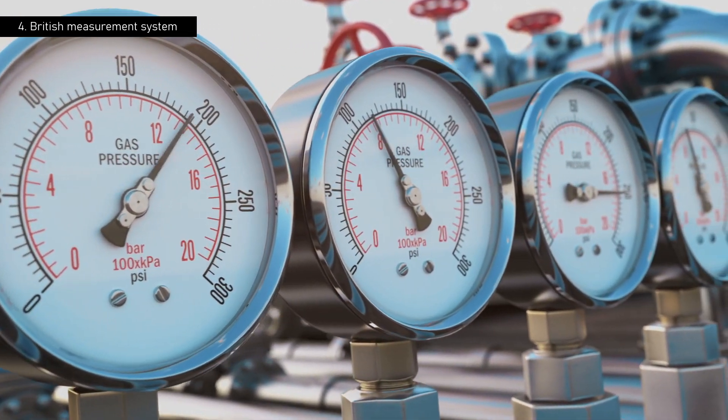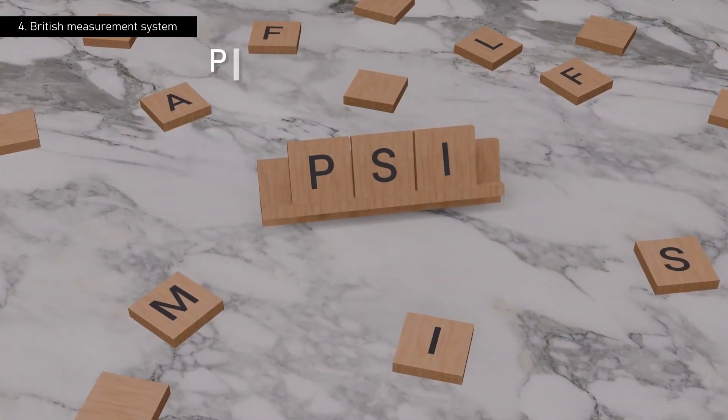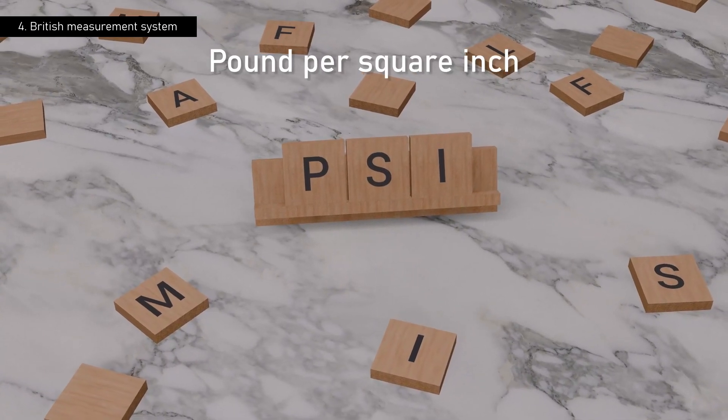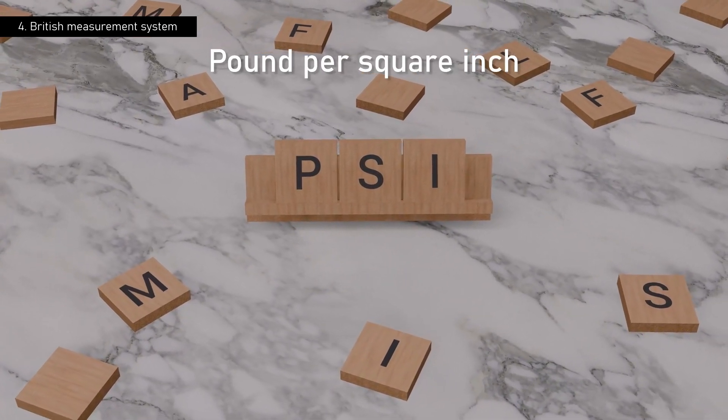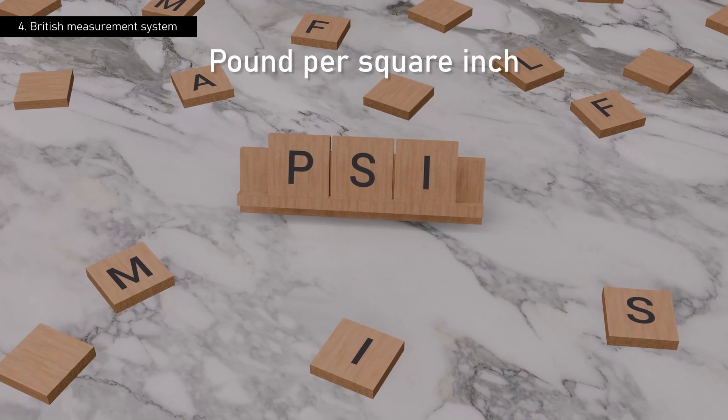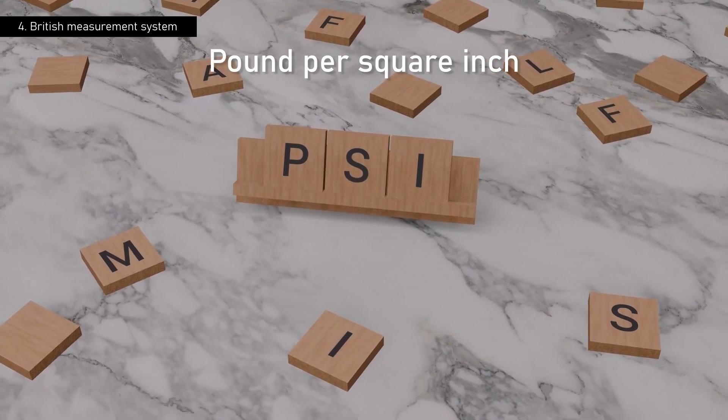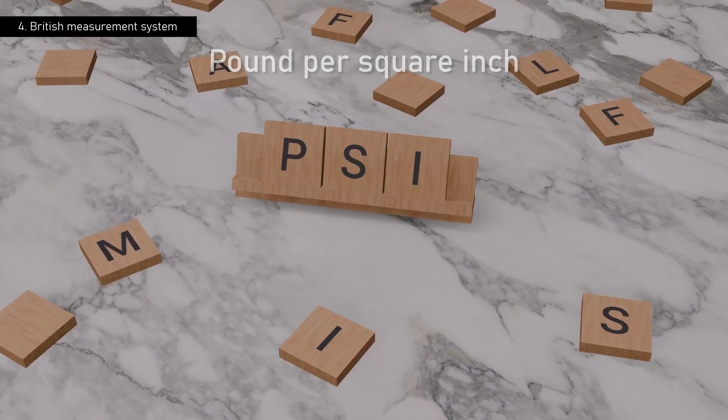Similarly, in the British system of units, pressure is expressed in PSI, pound per square inch. So, the correct request would be for the chamber to be able to create a vacuum of five PSI.